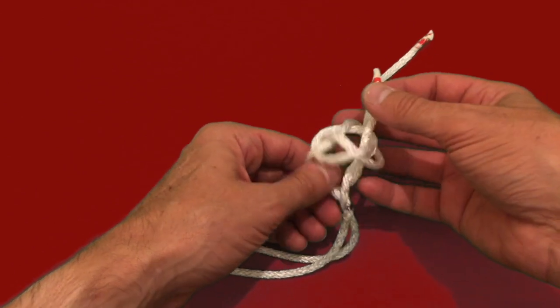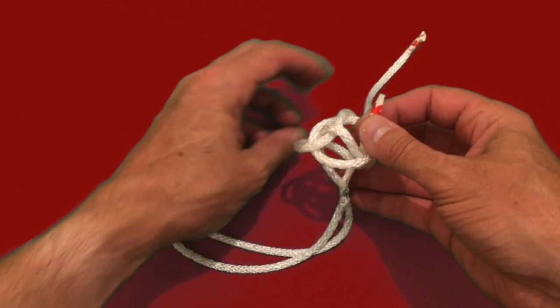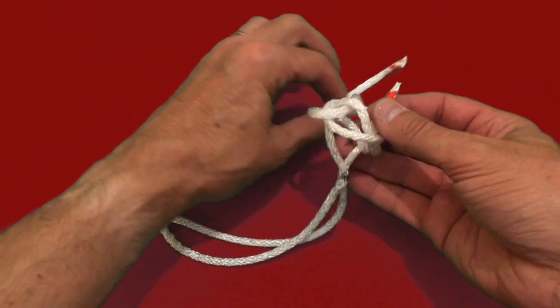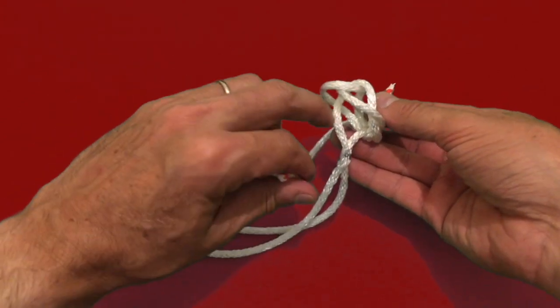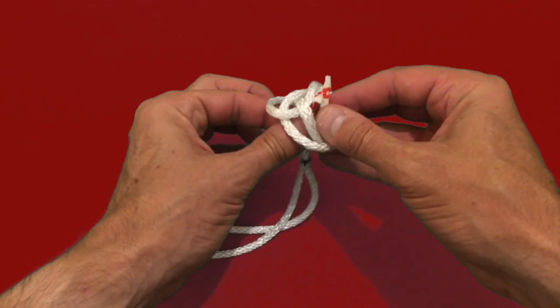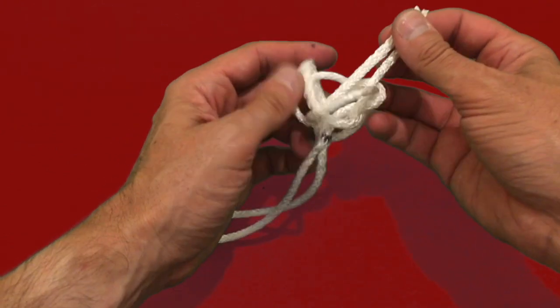You then want to hold that while taking the other tail, wrapping it around the back of the knot in front of the two lines of the soft shackle, and then up through the same central hole.